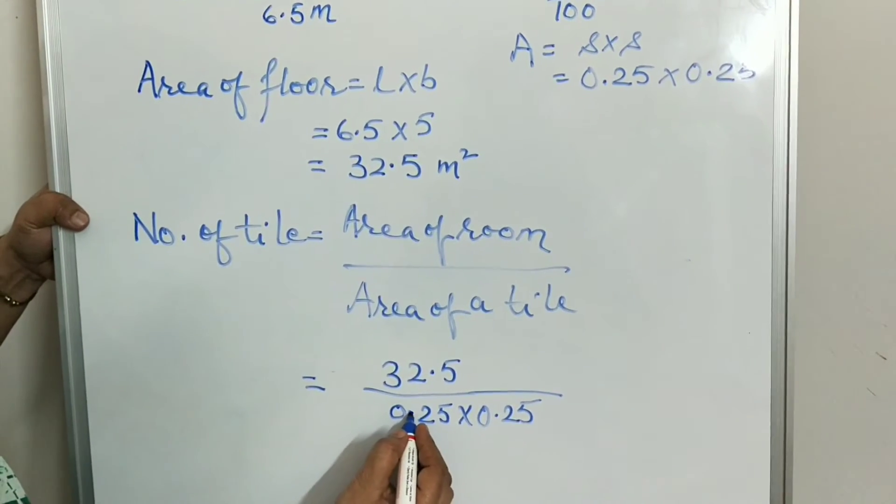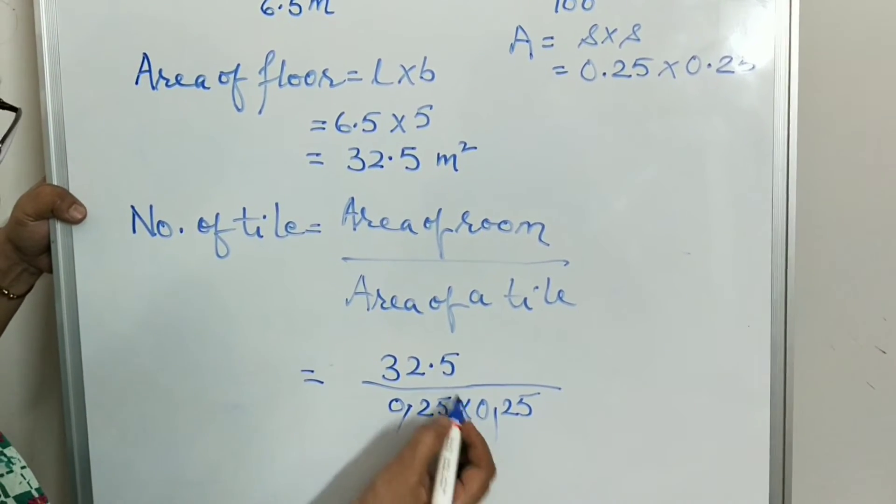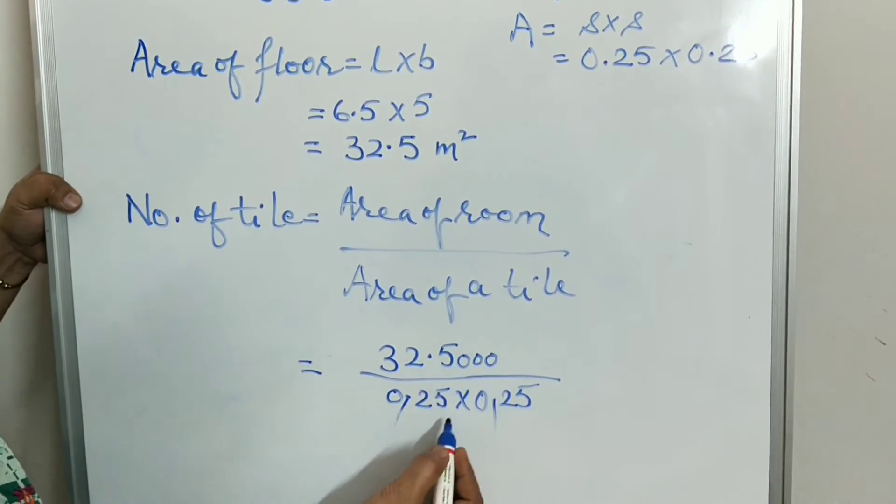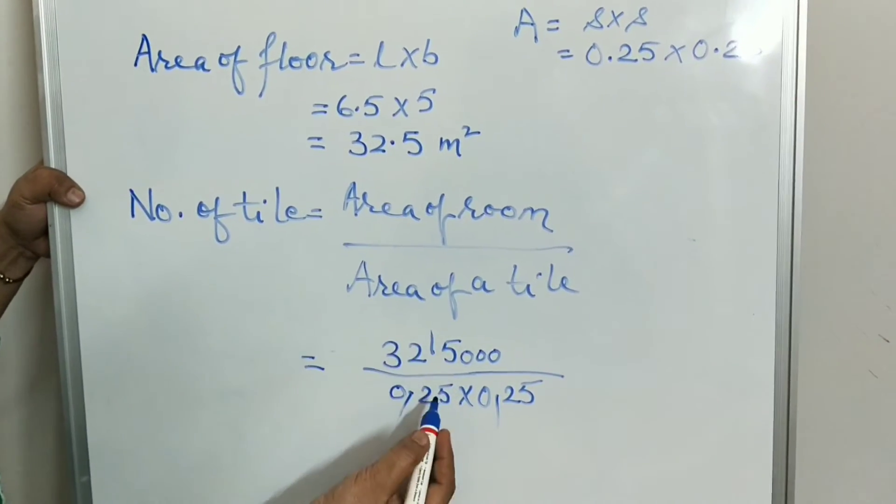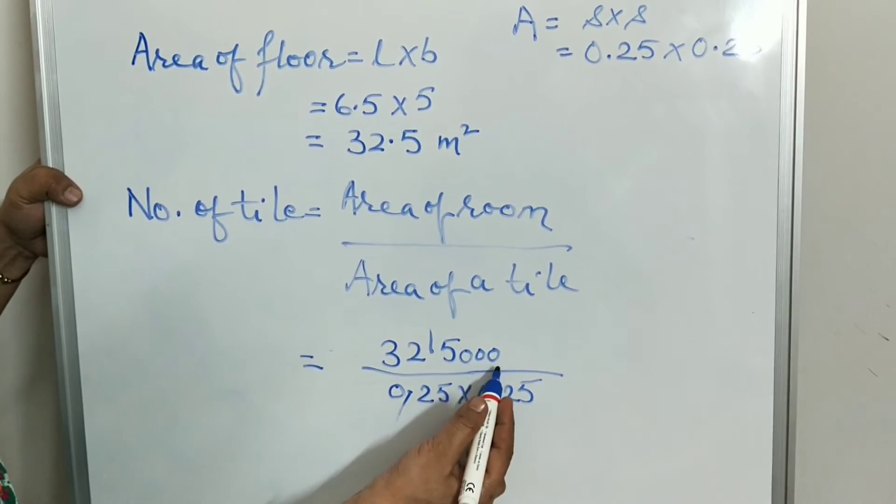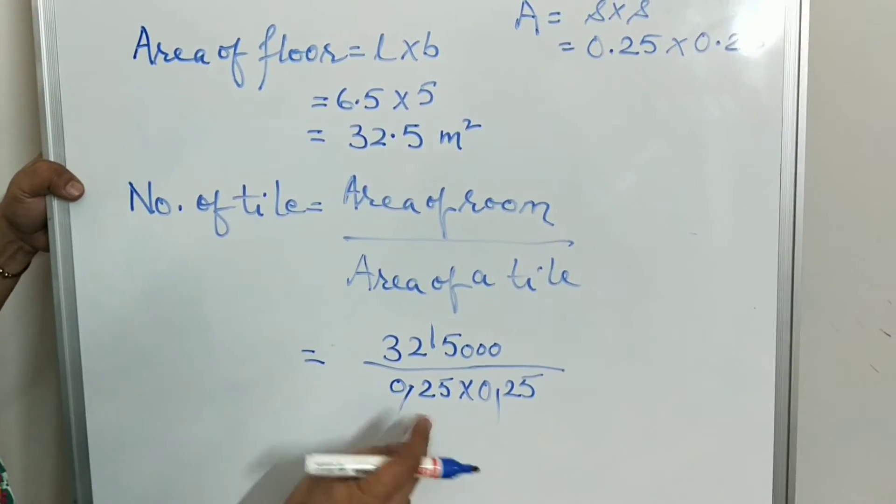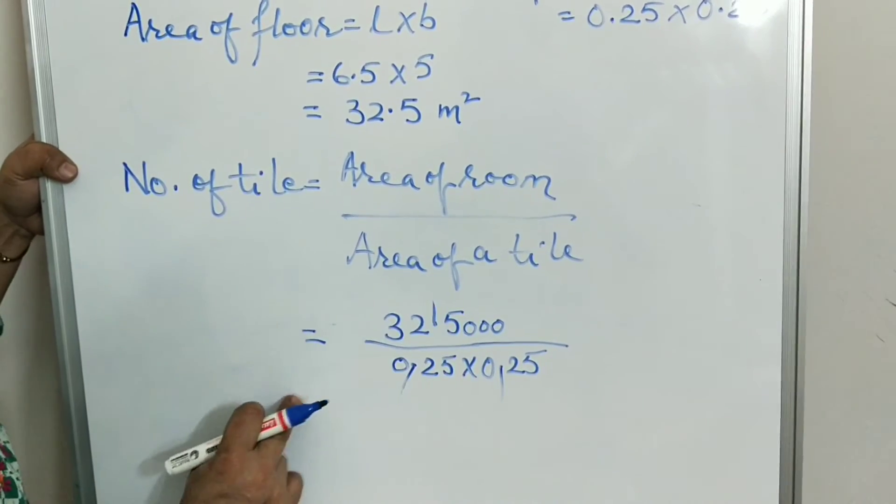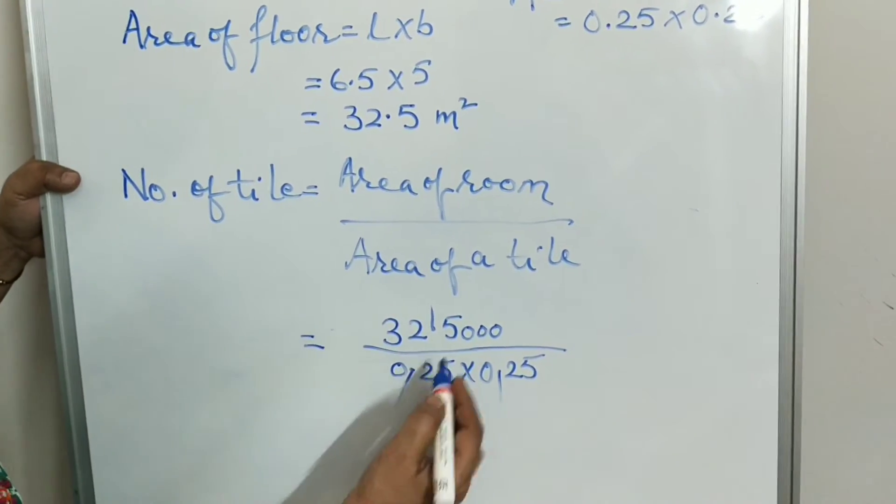We need to remove the decimal. Here there are 2 and 2, 4 decimals. Above there is 1, so we put 3 zeros here. When we remove decimals, the numbers after decimal should be equal. Below 2 and 2 is 4, above also after decimal is 4. We have removed the decimal.